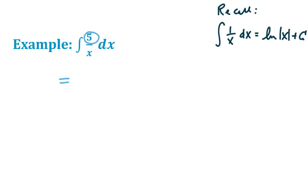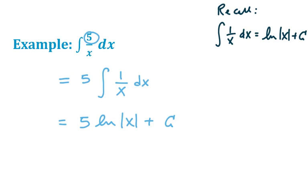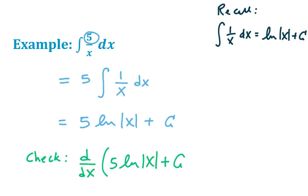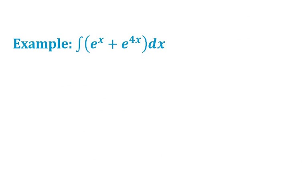The factor of 5 can be brought out front of the integral, so we have 5 times the integral of 1 over x, which becomes 5 times the natural log of the absolute value of x, plus a constant of integration. To check: the derivative of 5 times the natural log of x plus c gives 5 times 1 over x, which is 5 over x — matching what we started with.